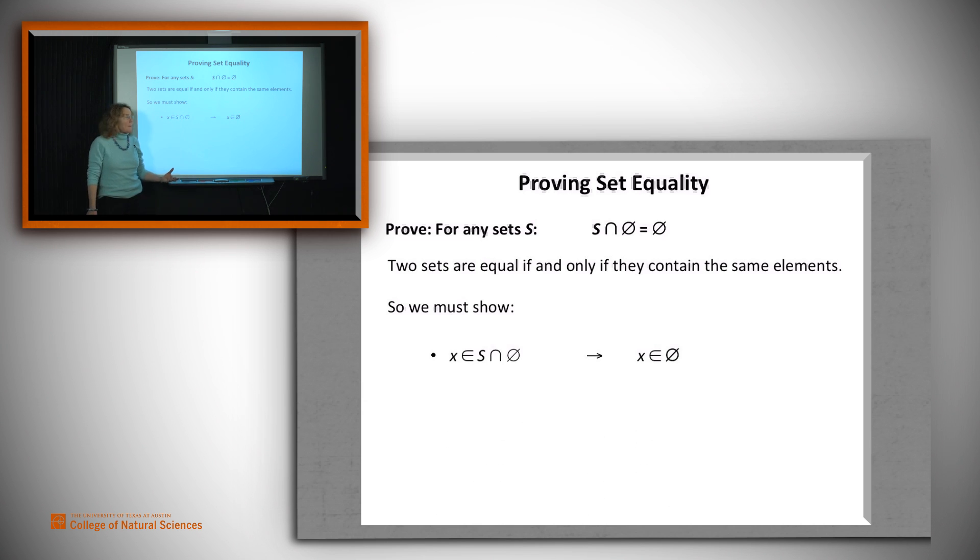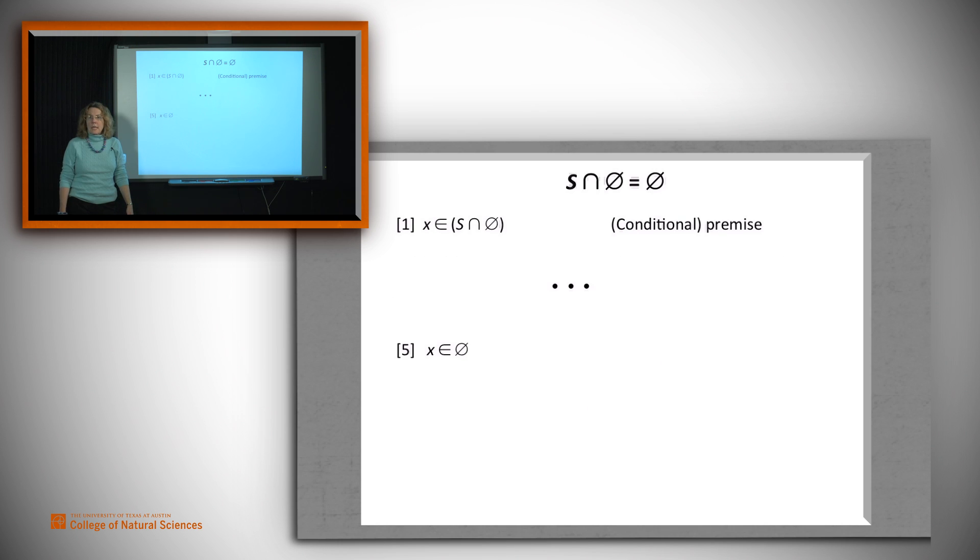That if some arbitrary element x is in the first of these two sets, it has to be in the second one. And suppose we go the other way, we prove that if it's in the second one, it's also in the first one. Then we can argue that the two sets contain the same elements.